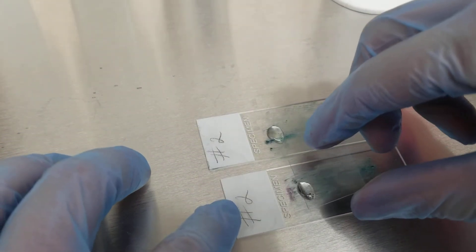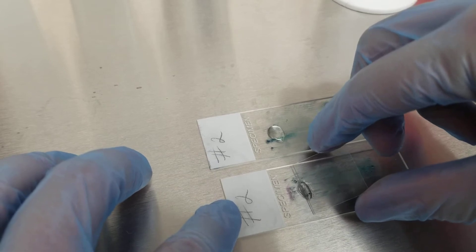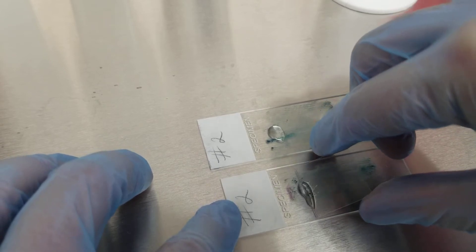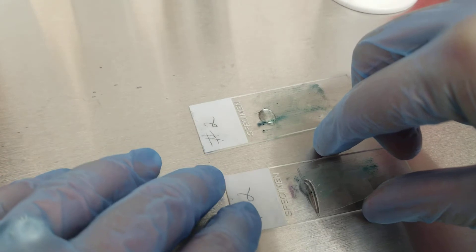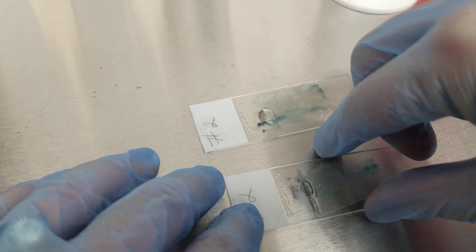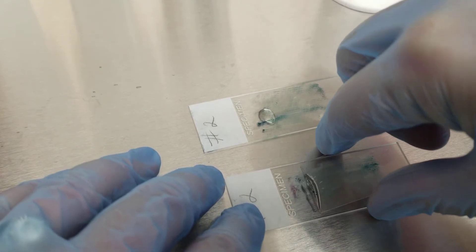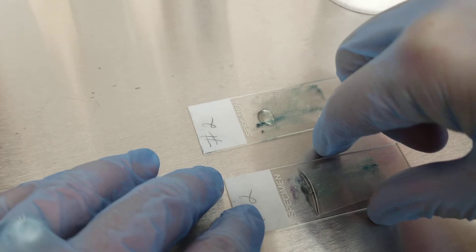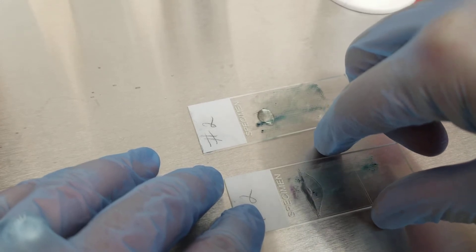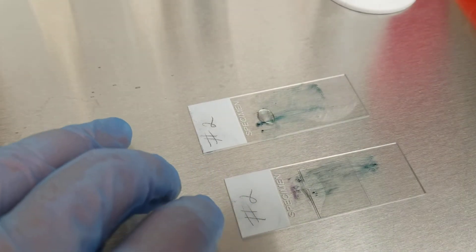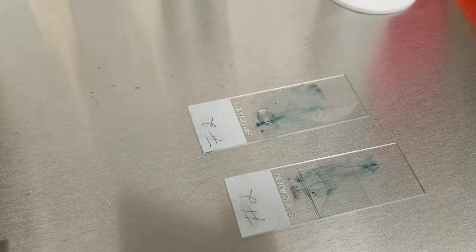But what you're going to do is the same thing you do with the wet mount where you let it go all the way across the slide to get it wet, kind of like a blood smear. And then you're going to let it fall on there and it should spread throughout the slide.